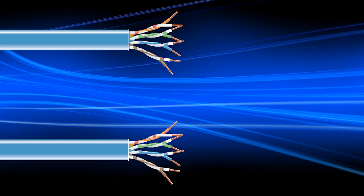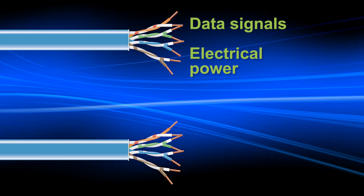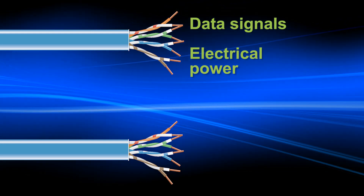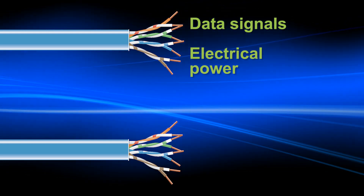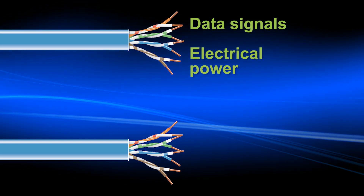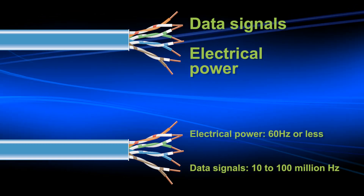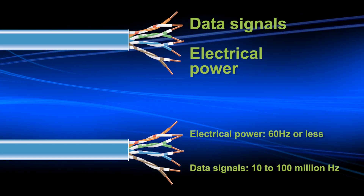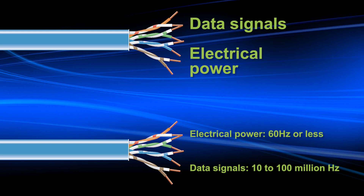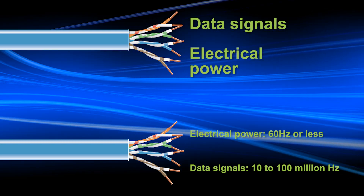The standards support two different methods of delivering power over Ethernet. In the first, two wire pairs are used for data and the other two pairs are used for power. In the second method, power and data are sent over the same pair, but the signals don't interfere with each other because AC power and data operate at opposite ends of the frequency spectrum. For example, electricity has a low frequency of 60 Hz or less, while data has frequencies that range from 10 million to 100 million Hz, so there is no interference.